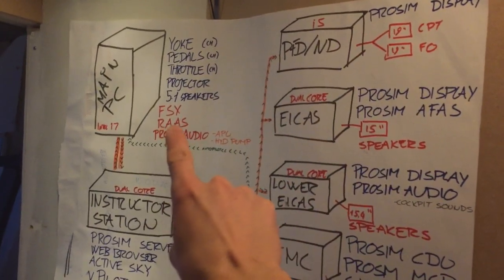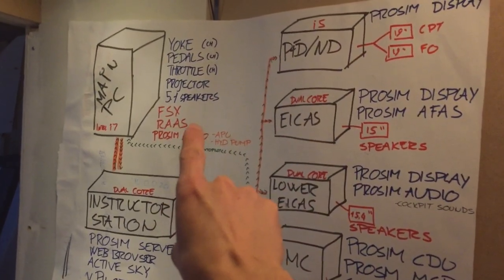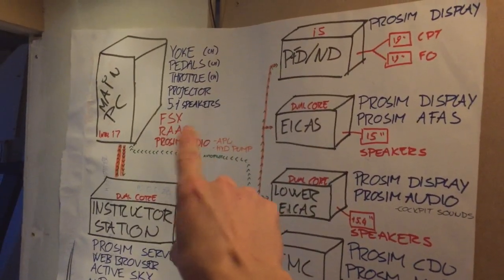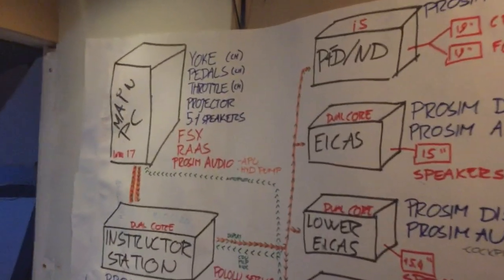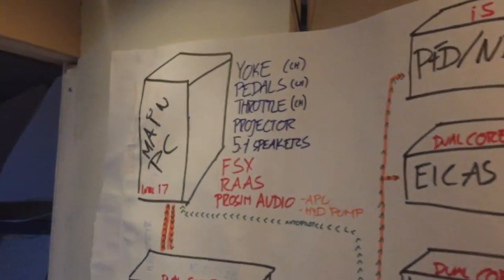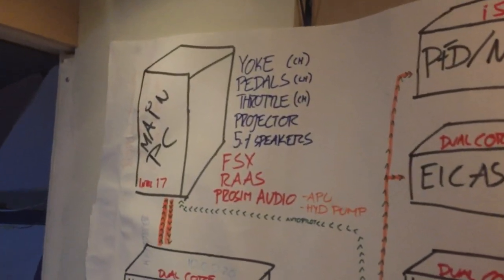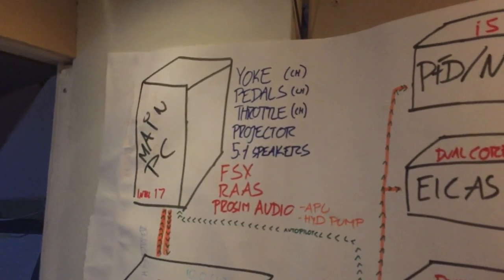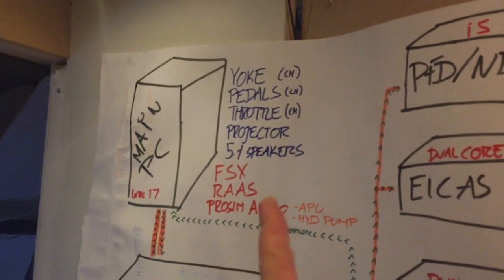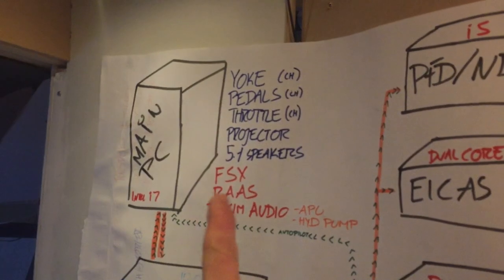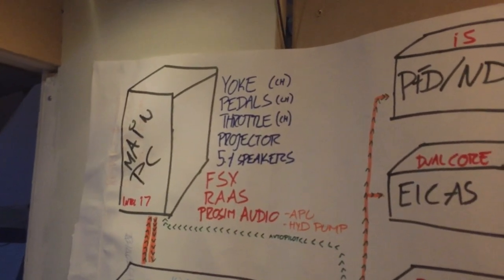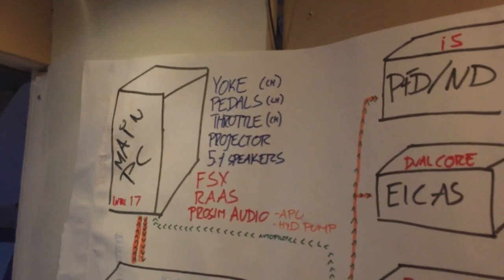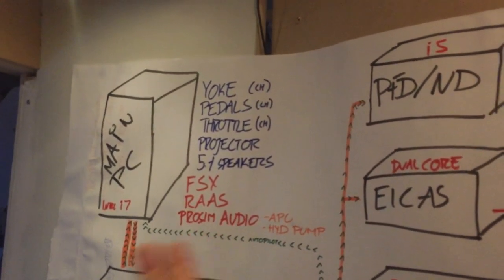It is running Flight Simulator and runway awareness and alert system — a program that alerts you when you approach a runway, saying 'approaching runway 1-2.' I was not able to get this to work via network, so it has to be connected to the computer that runs Flight Simulator.